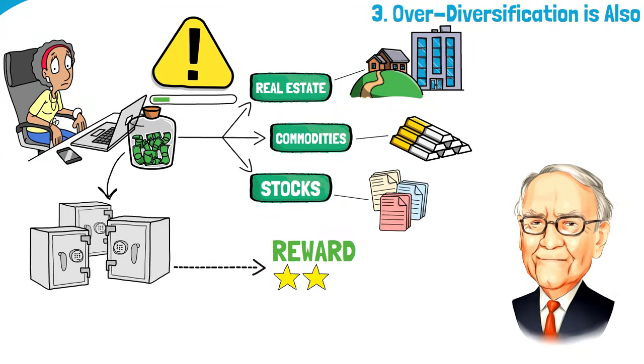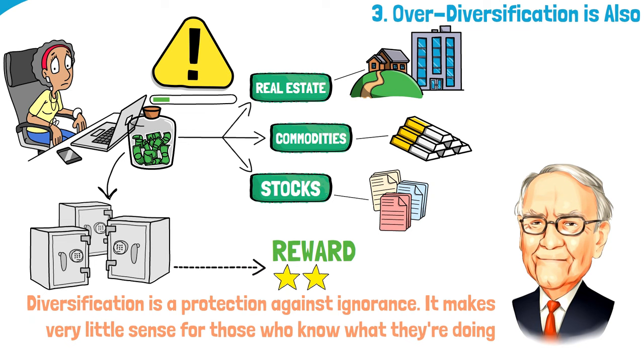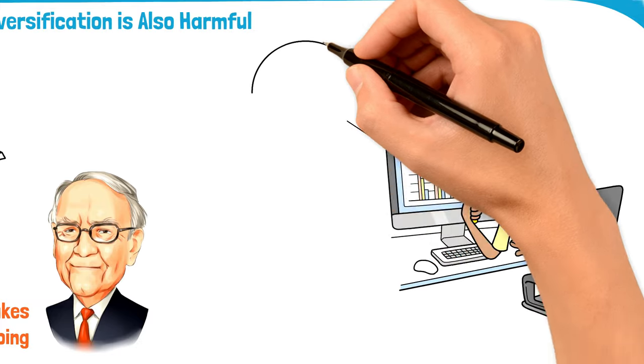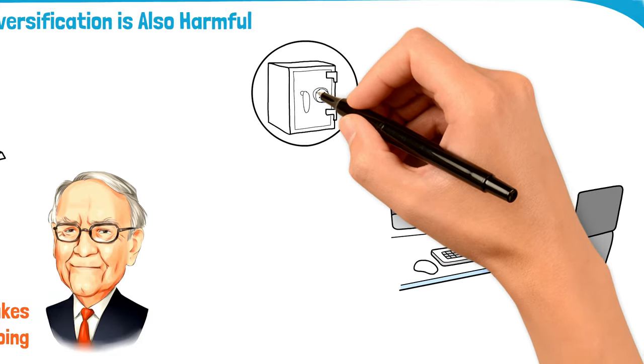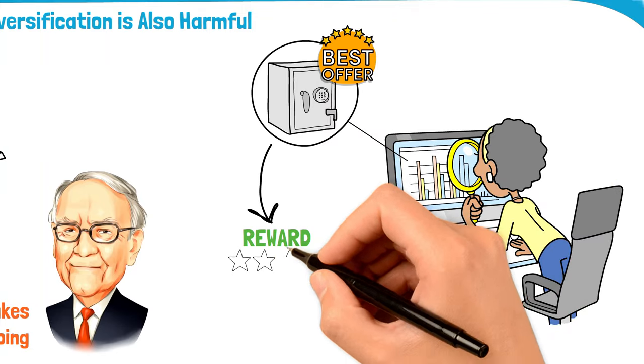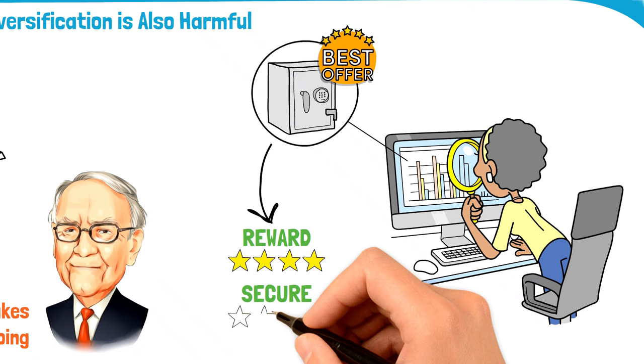Buffett's been pretty clear on this, saying diversification is a protection against ignorance. It makes very little sense for those who know what they're doing. He's not saying we should put all of our eggs into one basket. Instead, he's nudging us to find that sweet spot—enough variety to spread risk, but not so much that we dilute our potential gains or lose track of what we're investing in.